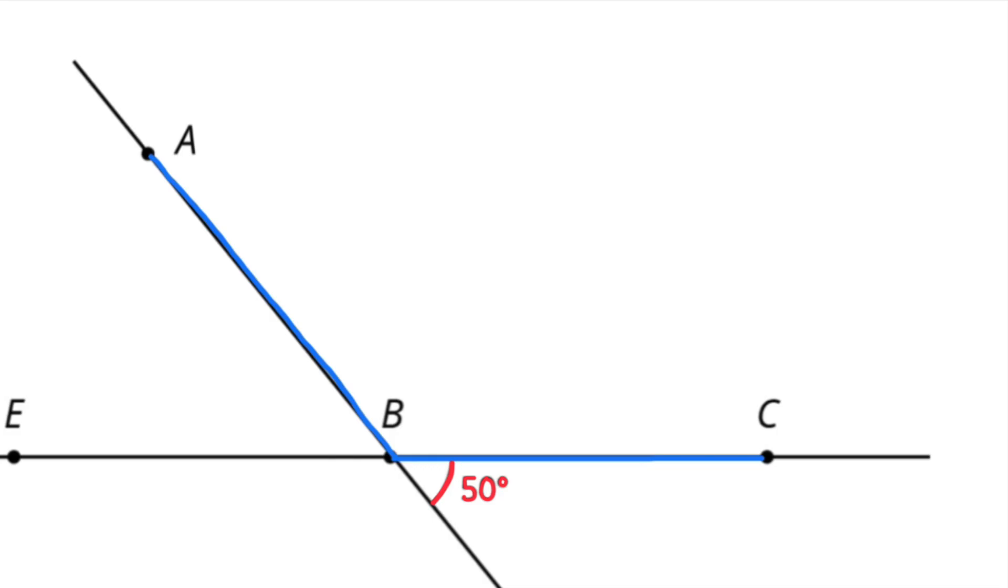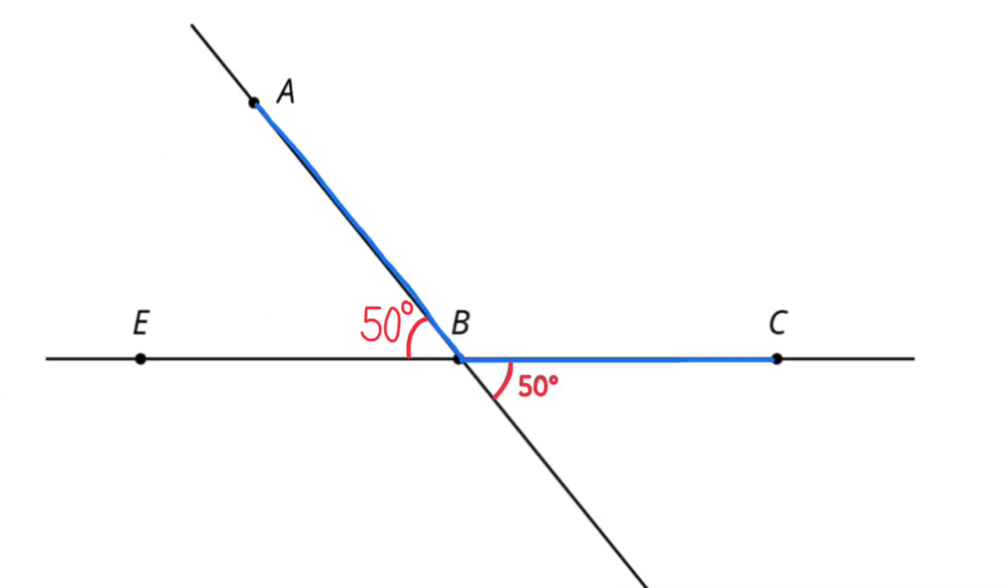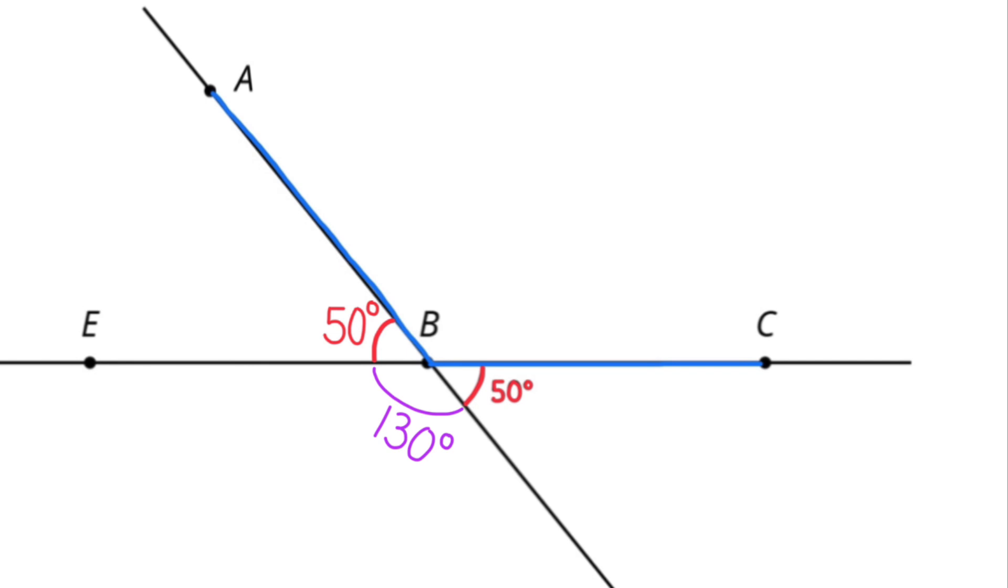I know that vertical angles or opposite angles share the same vertex and their angle measures are equal. So opposite 50 degrees will be another angle of 50 degrees.